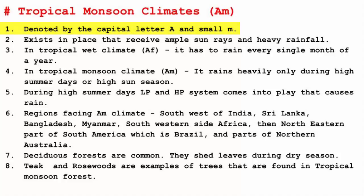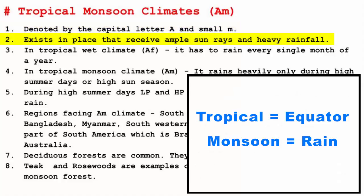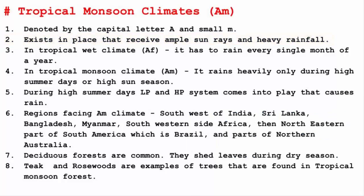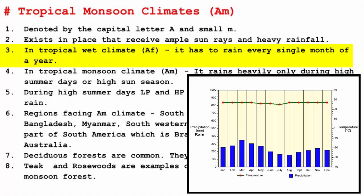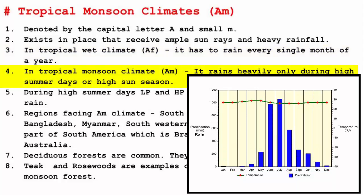When you look at the word Tropical Monsoon Climate, you need to look for places which are in the tropical region and also face heavy rainfall. The only difference between Tropical Monsoon Climate and Tropical Wet Climate is that in Tropical Wet Climate, it has to rain every single month of the year, and also sometimes on a daily basis. But in Tropical Monsoon Climate, it is not a necessity that every single month of the year has to have rain. It rains heavily only during high summer days or high sun season.